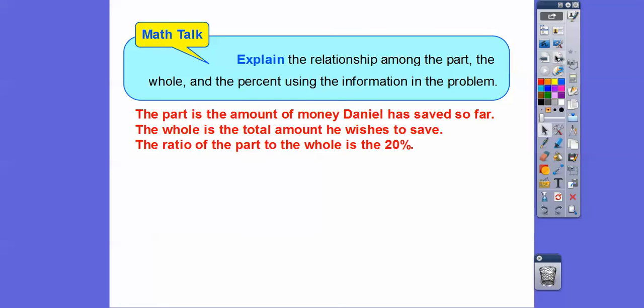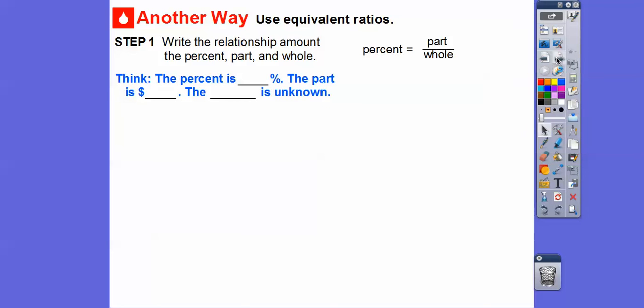The whole is the total amount that he wishes to save, which was the $140. And then the ratio of the part to the whole was the percent or 20 percent.